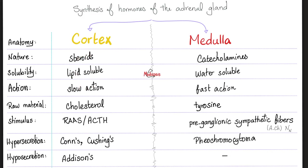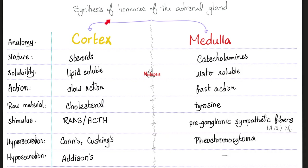Lipid hormones are basically derived from cholesterol — that's why these hormones are called aldosterone and cortisol, with the '-sterone' suffix indicating cholesterol origin. We also have DHEA, dihydroepiandrosterone, which is also a steroid. The catecholamines came from an amino acid known as tyrosine. The zona glomerulosa secretes aldosterone, stimulated by the renin-angiotensin-aldosterone system. The zona fasciculata and reticularis secrete cortisol and adrenal androgens respectively, stimulated by ACTH from the anterior pituitary under the influence of CRH from the hypothalamus.